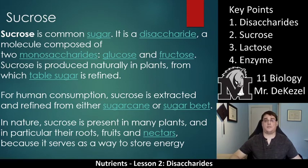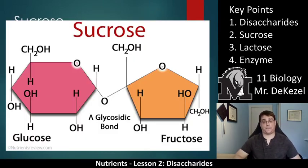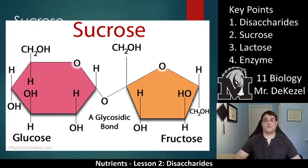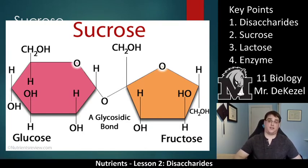Pause and copy this down, maybe not in full — abbreviate where you can and decide what is most important. This is a picture of a sucrose molecule: glucose is on the left and fructose is on the right, joined together by a glycosidic bond. You don't need to draw this — you just need to be able to recognize it. If you're shown a disaccharide made of a glucose and a fructose joined together, you would know that it is sucrose.